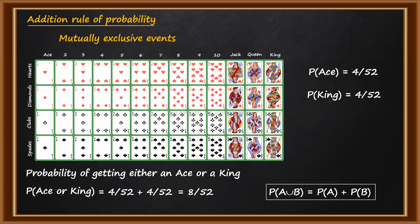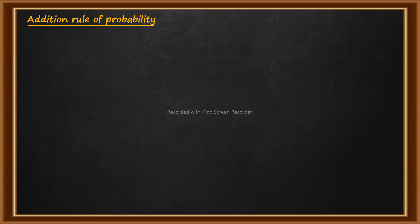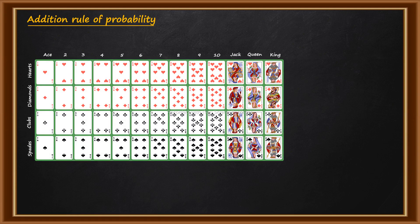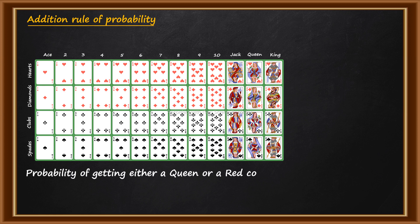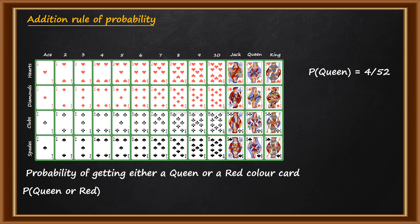Now let us talk about the other case — when the events are mutually non-exclusive. Consider the same pack of cards. Let us suppose we have to find out the probability of getting either a Queen or a red color card. So here we find the probability of Queen and probability of red color card separately. Probability of Queen is equal to 4 by 52, since there are 4 Queens in the pack of 52 cards.